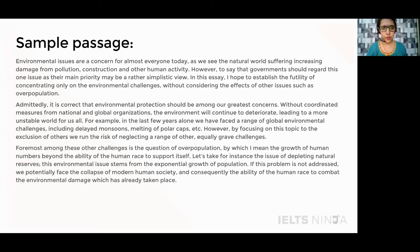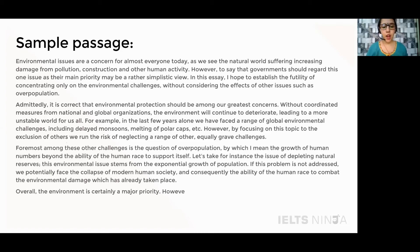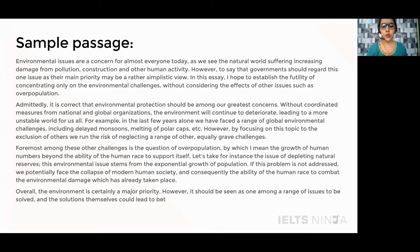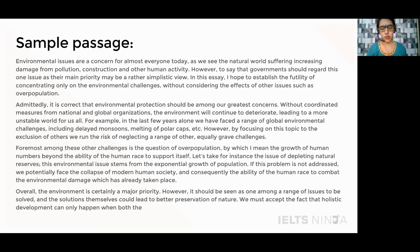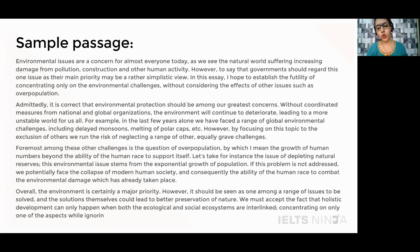Coming to the conclusion of my passage — please keep in mind that your conclusion should be in parallel to your initial paragraph and at the same time should review all the key points that you have touched upon. My conclusion reads: 'Overall, the environment is certainly a major priority. However, it should be seen as one among a range of issues to be solved, and the solutions themselves could lead to better preservation of nature.' This is a direct re-iteration of our initial introduction. 'We must accept the fact that holistic development can only happen when both the ecological and social ecosystems are interlinked. Concentrating only on one aspect while ignoring others is futile.' I have re-iterated my core point of view in the conclusion while summing up the basic context in which I have written.